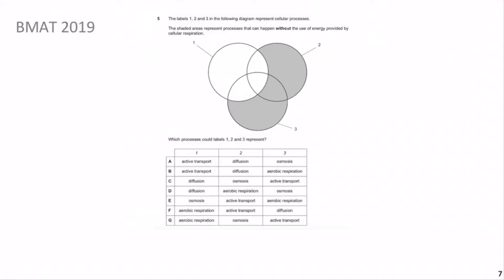This question is from BMAT 2019 - the paper I personally sat. Question 5: labels 1, 2, and 3 in the diagram represent cellular processes. The shaded areas represent processes that can happen without energy provided by cellular respiration and therefore ATP. This means that labels 2 and 3 are passive processes, whereas label 1 is an active process.